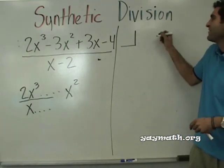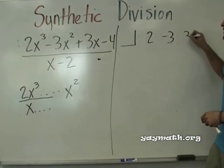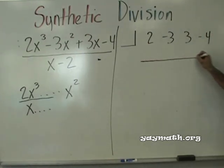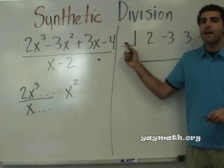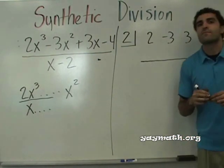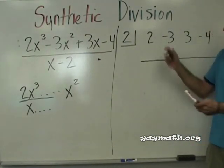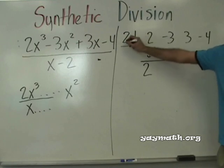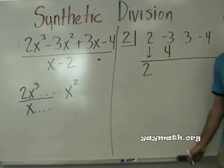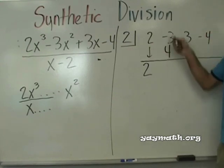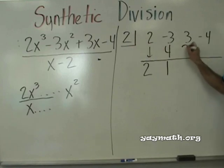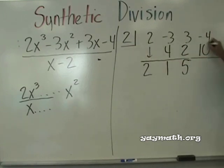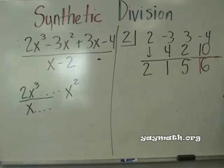Coefficients — go. 2, negative 3, negative 4. Number in the box: positive 2. Bring the 2 down, then multiply it by 2 — that's 4. Add — 1. Multiply — 2. Add — 1. Multiply — 2. Add — 5. Multiply — 10. Add — 6. 6 is the remainder.